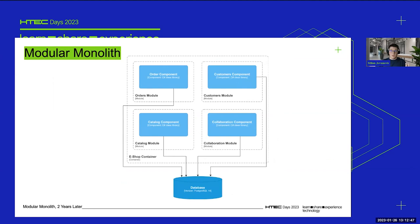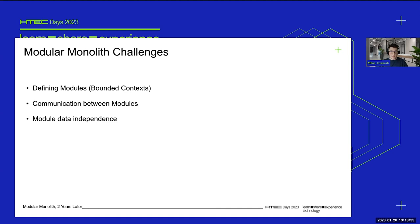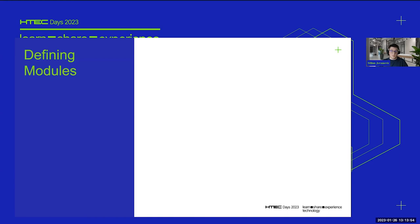Now let's talk about the challenges of building a good modular monolith. There are a couple of difficult problems to solve. First, you have to define your modules or bounded contexts. Second, you need to solve communication between modules, which implies trade-offs that matter if you later want to migrate from a modular monolith to a microservices architecture. Third, you need to solve data independence between modules. I'll go over each of these and describe potential solutions and trade-offs.